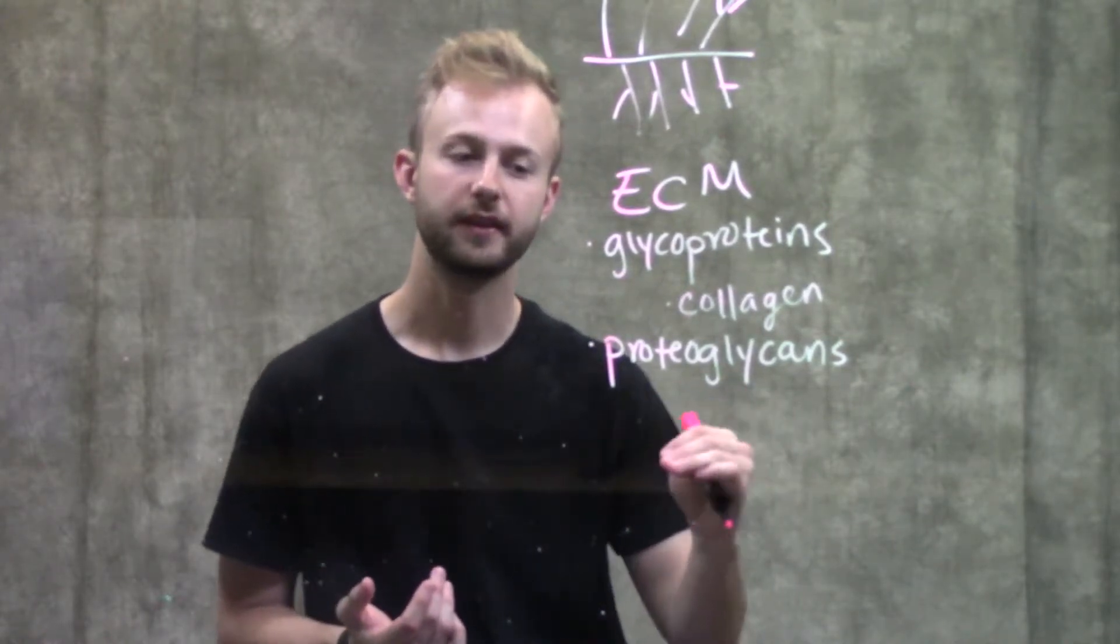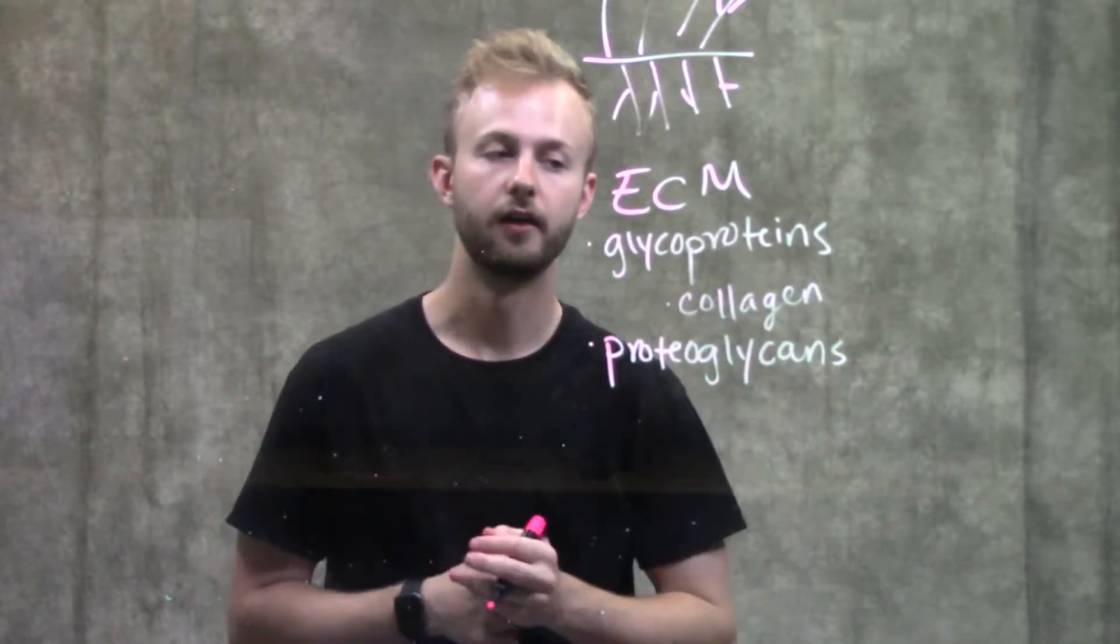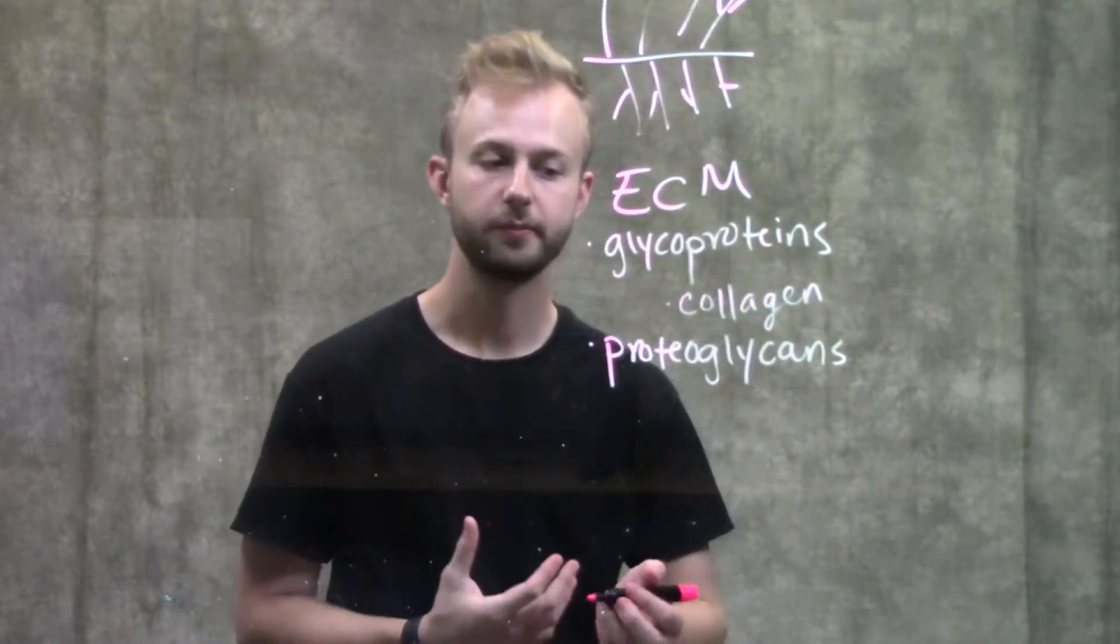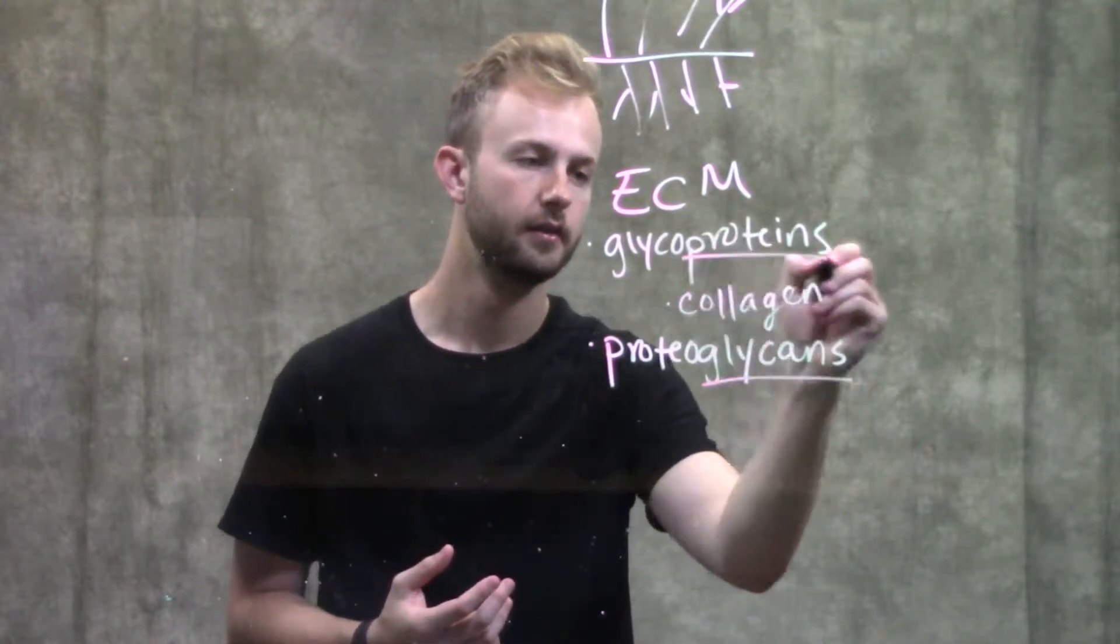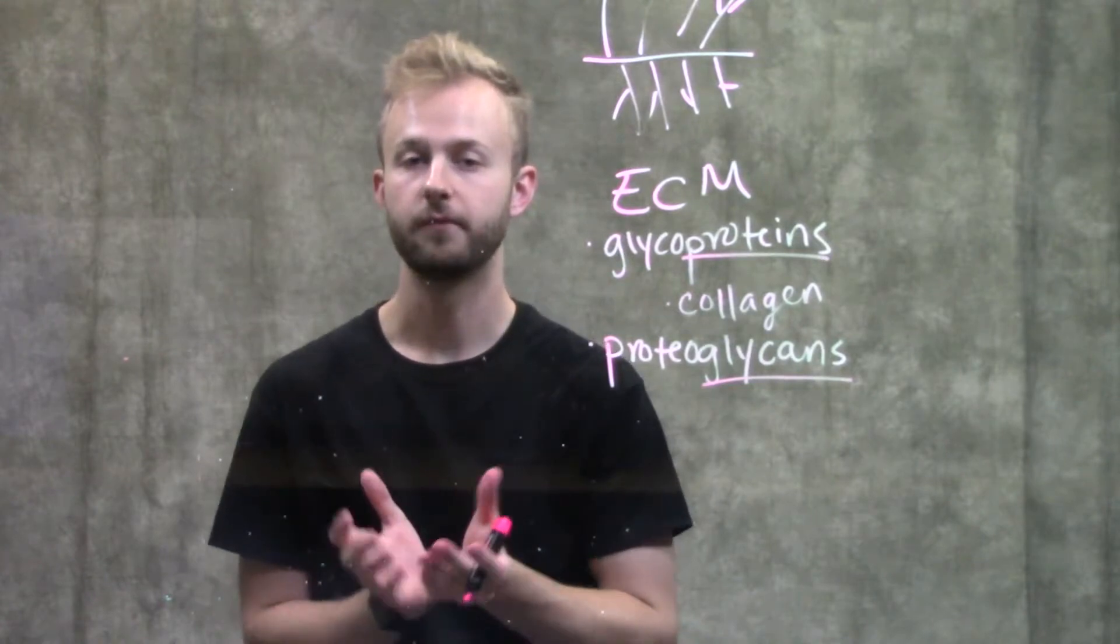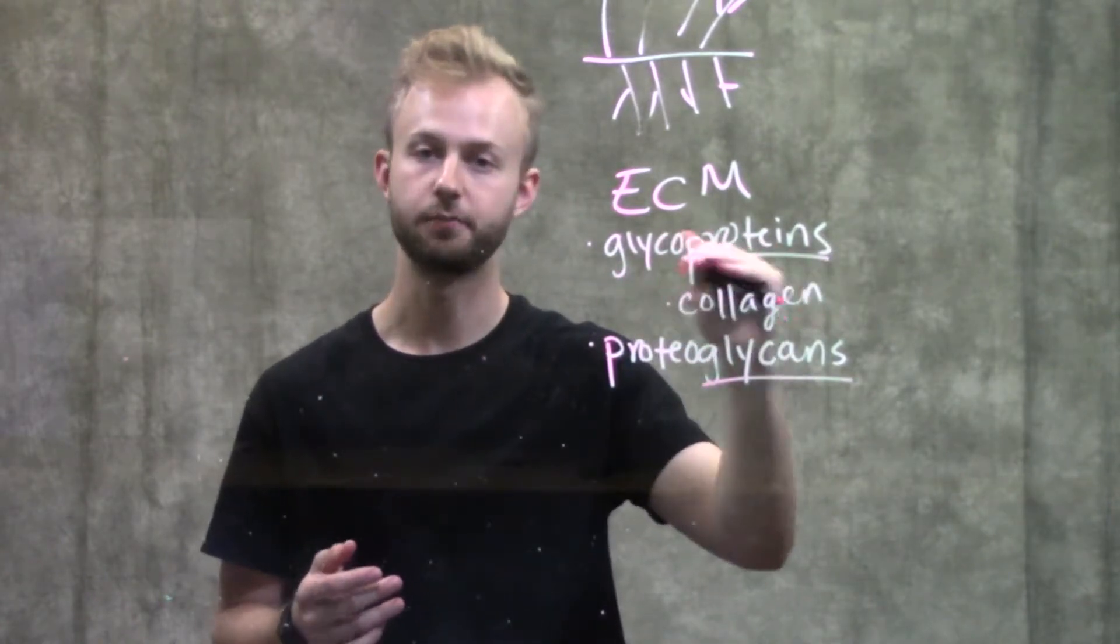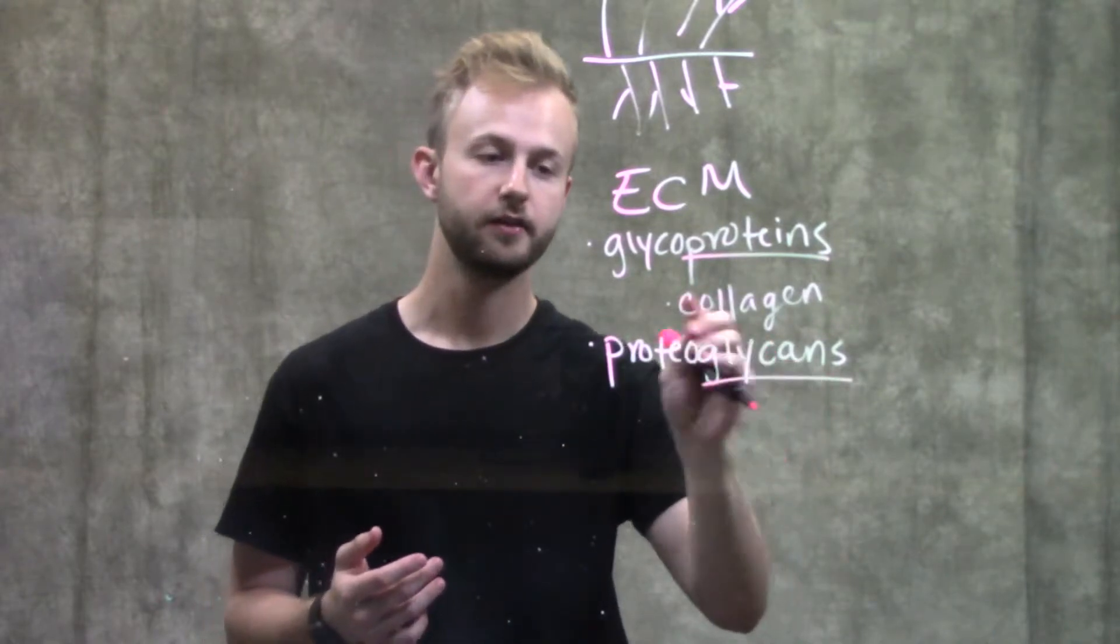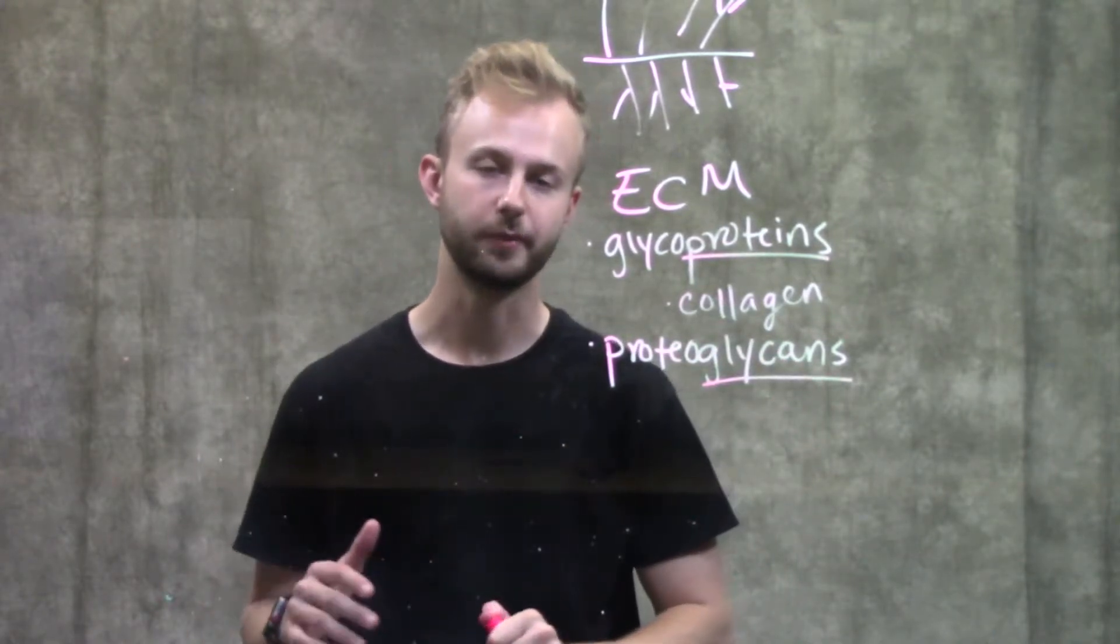An easy way to remember this is in things like proteoglycans or glycoproteins or glycolipids, the last part of the word is what's going to make up the majority of that molecule. So glycoproteins, the majority of it is protein. Proteoglycan, the majority of it is sugar. That's an easy way to remember that.